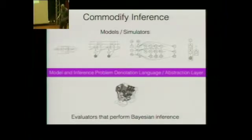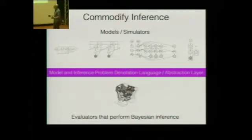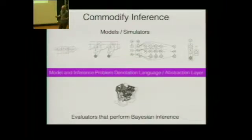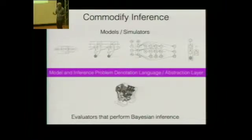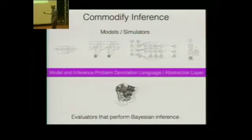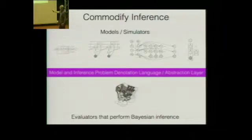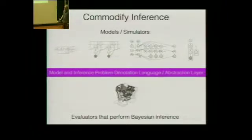The goal of the community is, you could argue, crazy or really powerful. The goal is basically to commodify inference. If we can build some sort of abstraction layer — a model specification language or a model and inference problem denotation language — this forms an abstraction barrier between people who write models and simulators and people who work on evaluators that perform Bayesian inference.